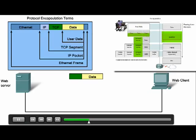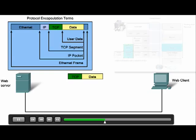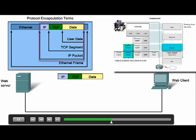Here, the application data is broken into TCP segments. Each TCP segment is given a label called a header, containing information about which process running on the destination computer should receive the message. The transport layer then sends the segment to the internet layer where the internet protocol is used. Here the entire TCP segment is encapsulated within an IP packet, which adds another label called the IP header.